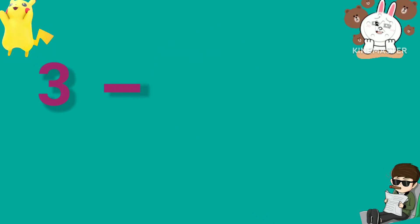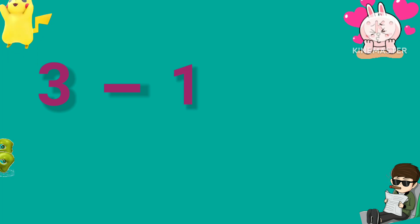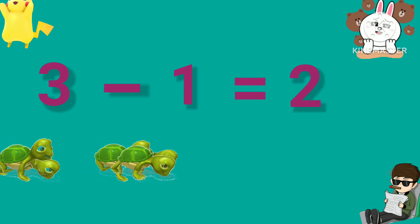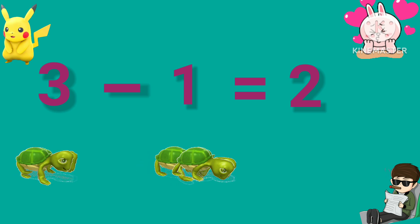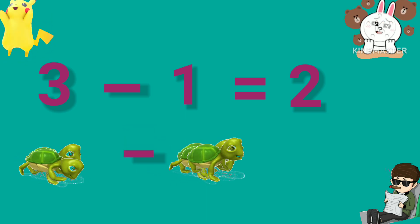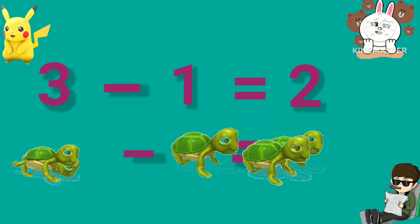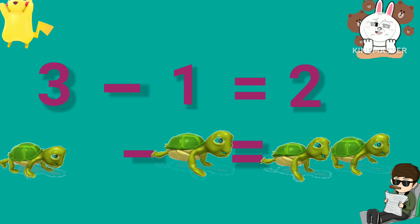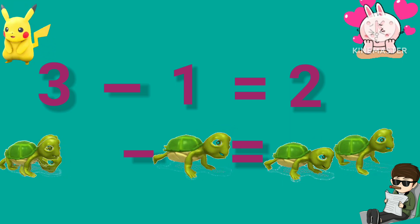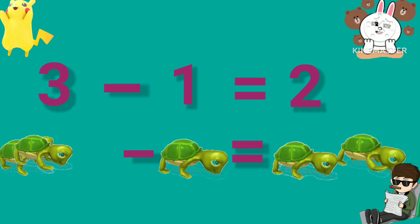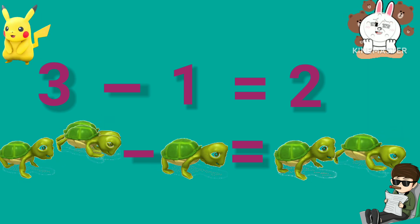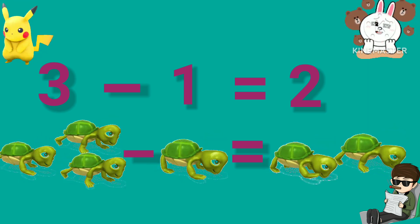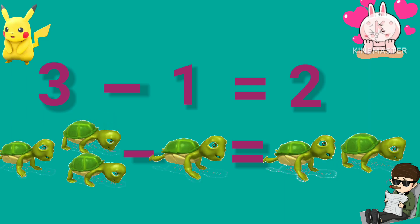3 minus 1 is equal to 2. We have 3 turtles minus 1 turtle, which is equal to 2 turtles. So 3 minus 1 equals 2.